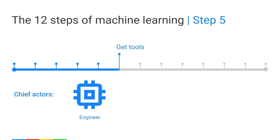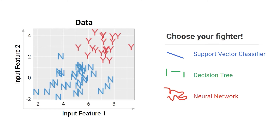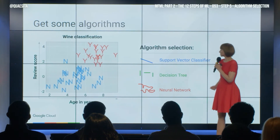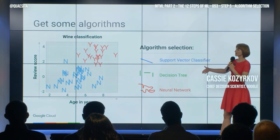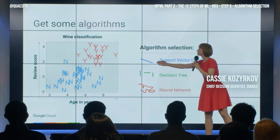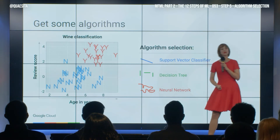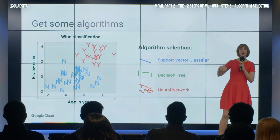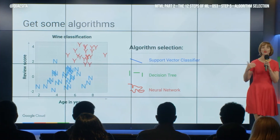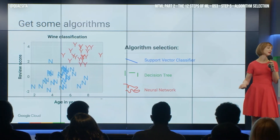Step five: getting the tools. In this step, we're going to get hold of some algorithms and apply them to our dataset. As I mentioned earlier, the difference between all these named algorithms tends to boil down to what is the allowable shape of the final recipe — what sort of object are we going to use to try to separate our data?